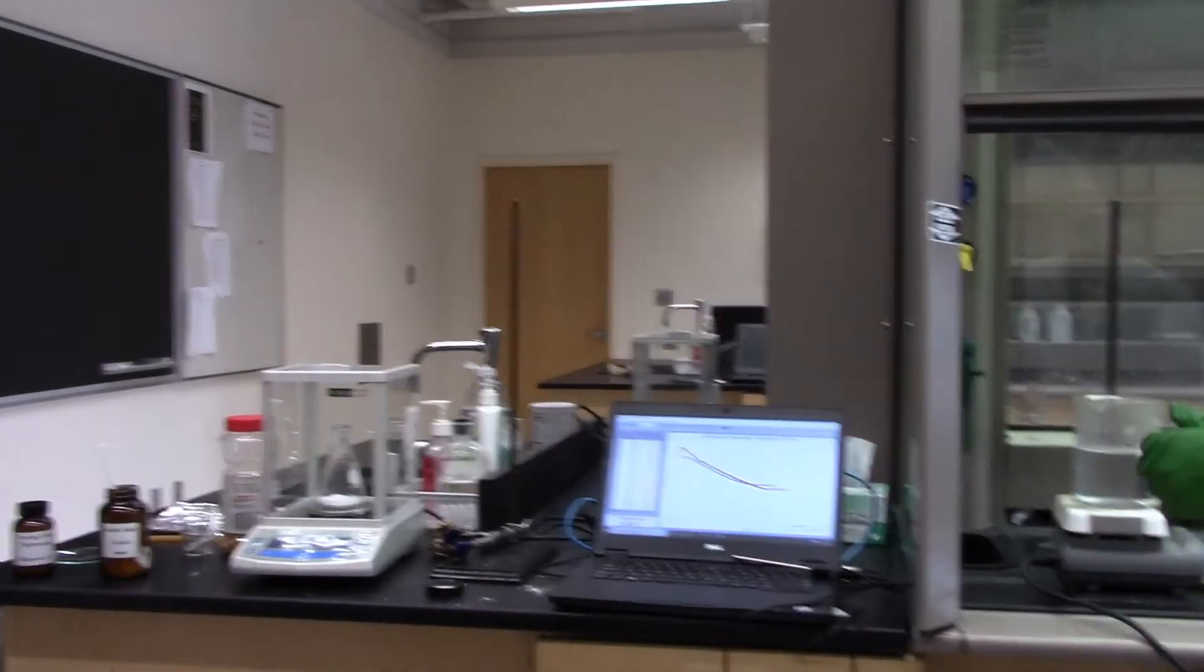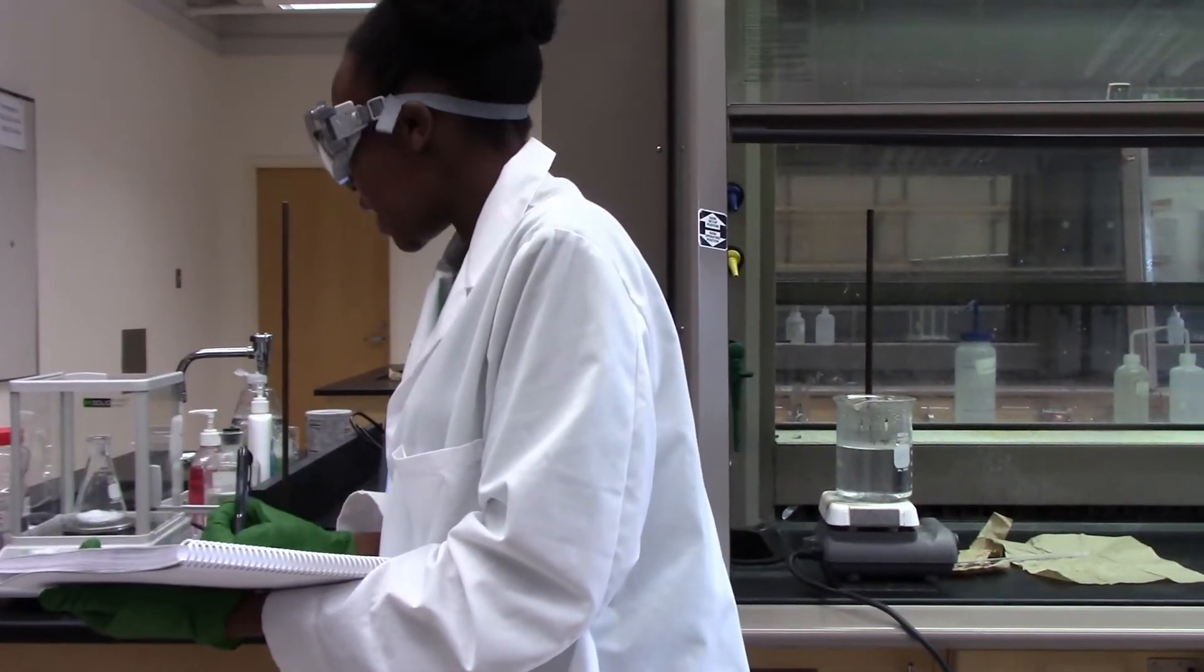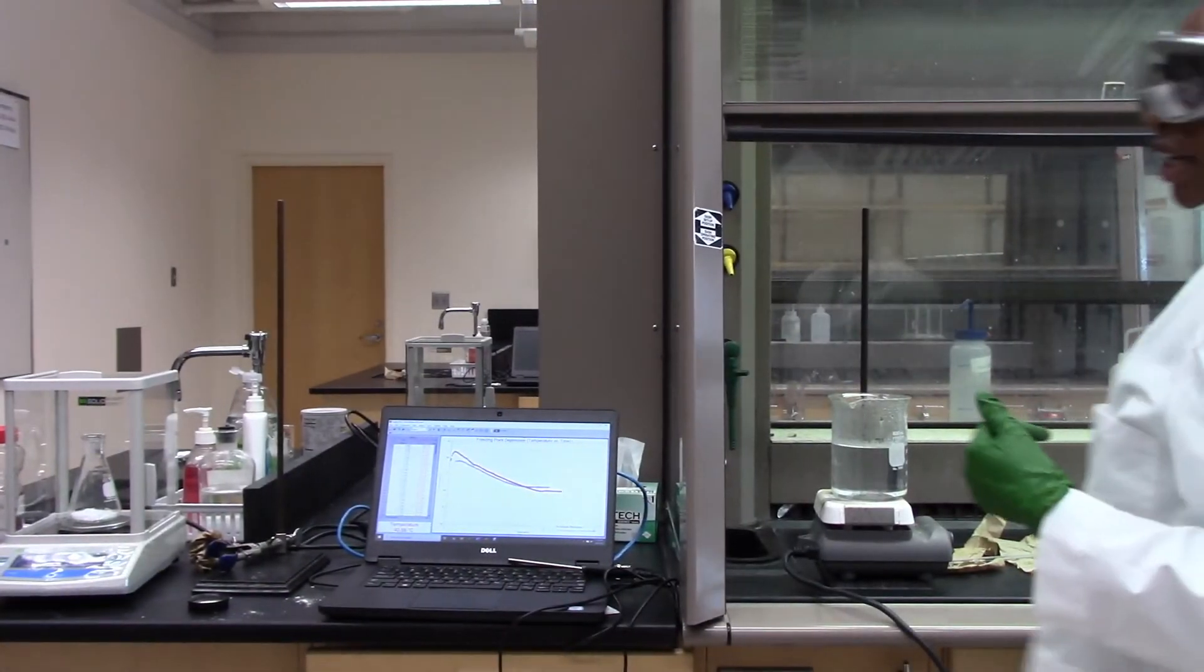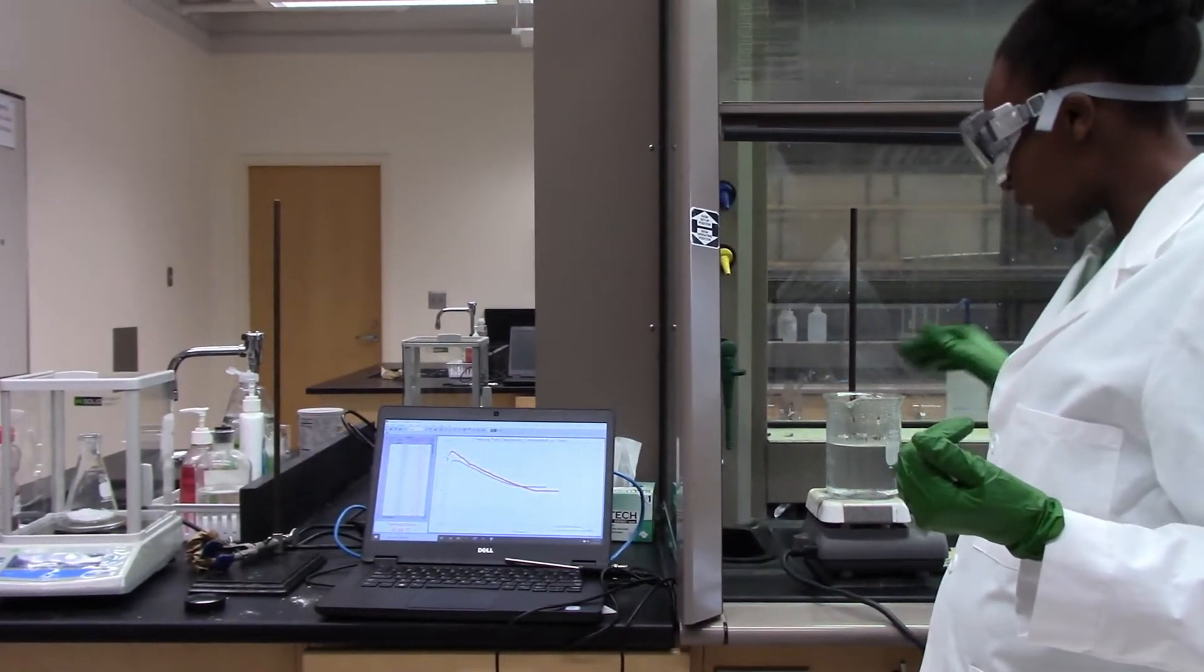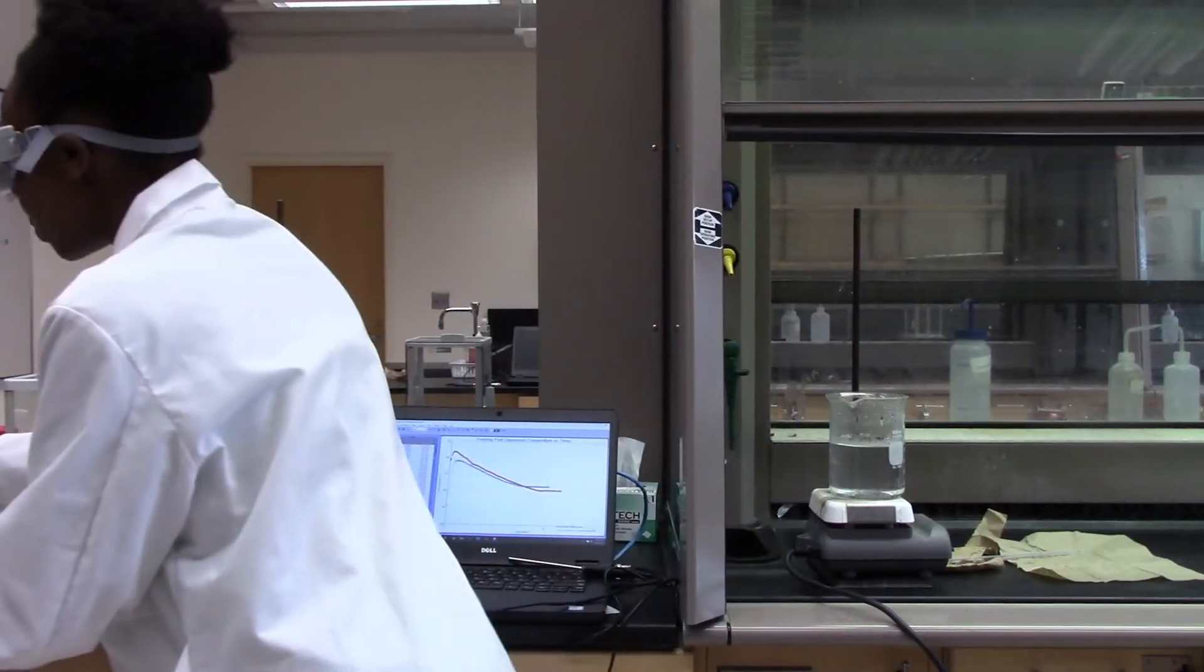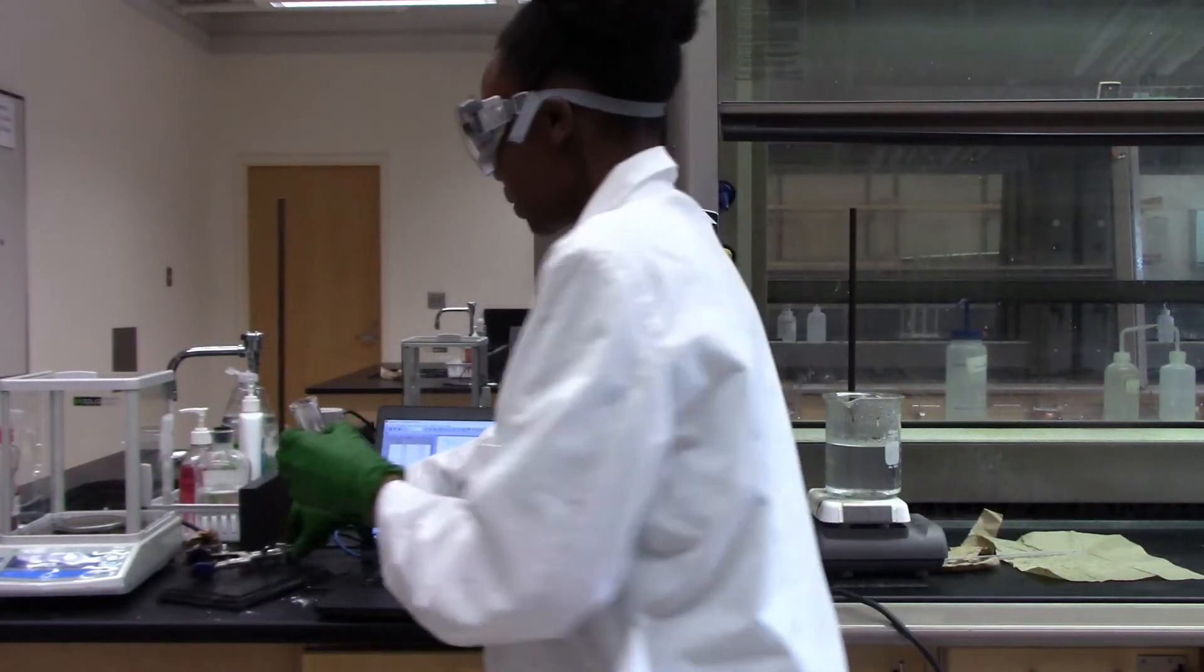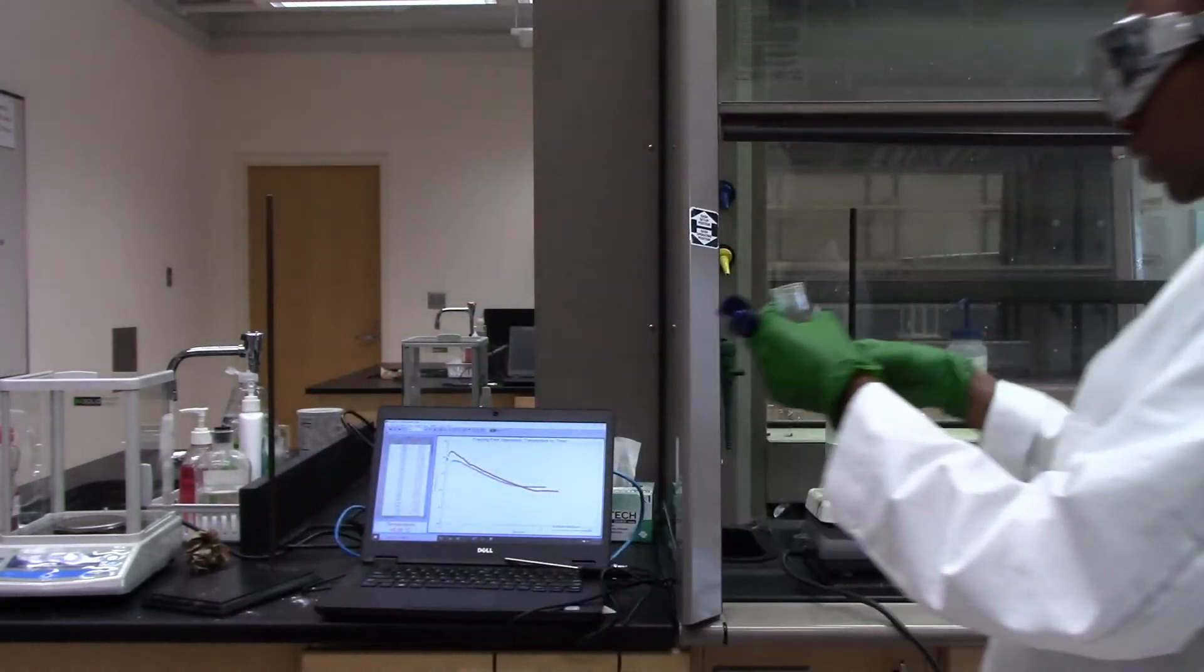Okay, so we have our flask and I added some lauric acid and the mass is 94.359 grams. And now what I'll do next, I have my water bath here started. I put some water in this beaker here and I heated it up. So I am going to place my flask with pure lauric acid into the water bath and melt it.